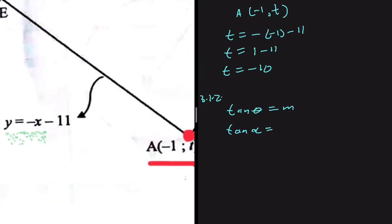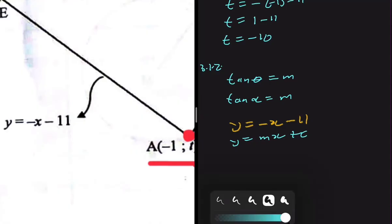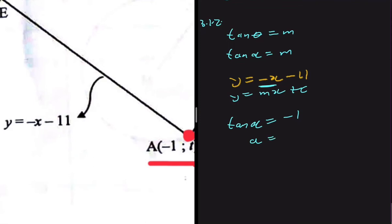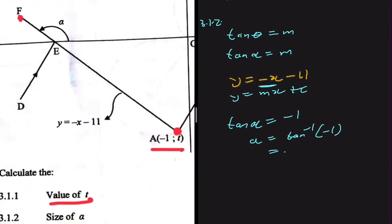From the equation y equals minus x minus 11, and comparing to the general form y equals mx plus c, the gradient m is the coefficient of x, which is minus 1. So tan of alpha equals minus 1, meaning alpha equals tan inverse of minus 1. Putting that into the calculator gives minus 45 degrees.